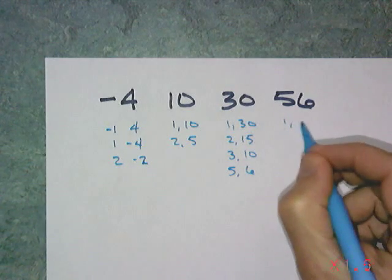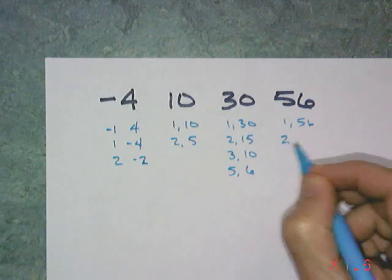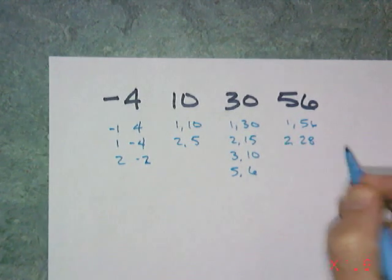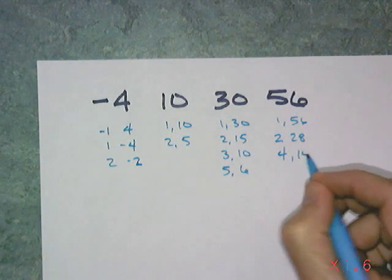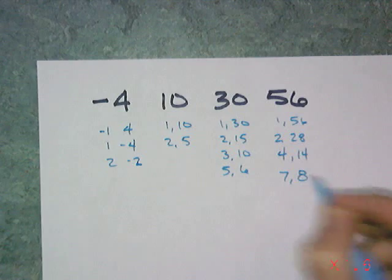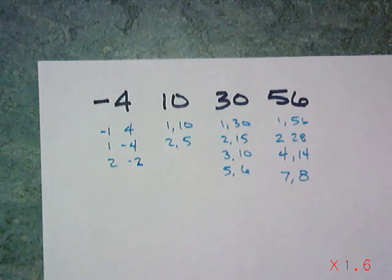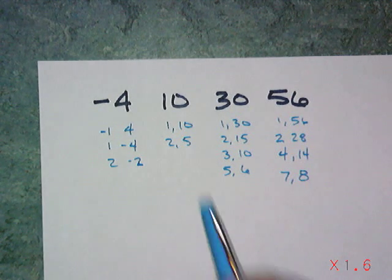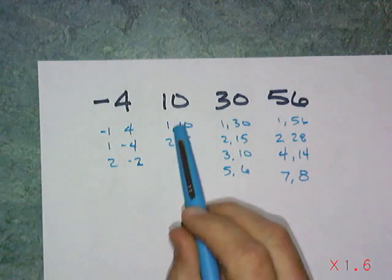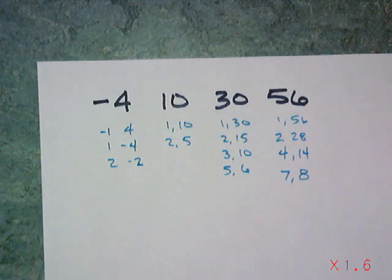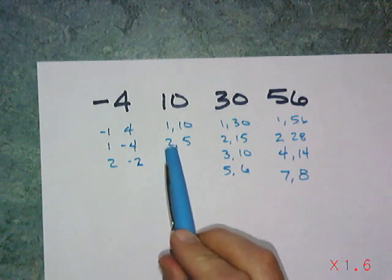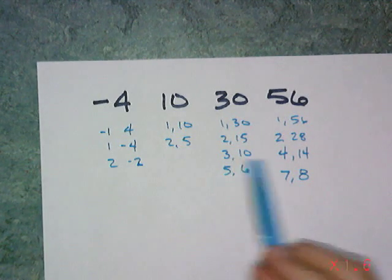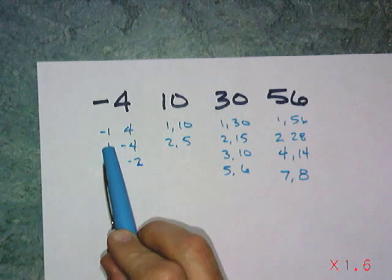30 is 1, 30, 2, 15, 3, 10, 5, 6. And 56, we want to do the 1 and 56, 2 and 28, 4 and 14, and 7 and 8. Since we only have two sets for factors of 10, let's start there. So if I start with 2, I can go 2, 3, 4. That looks nice. And then I can pick up that 1.